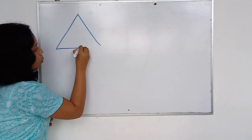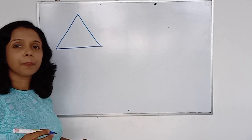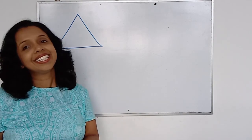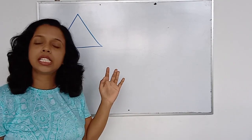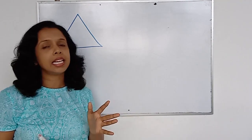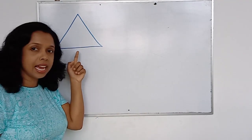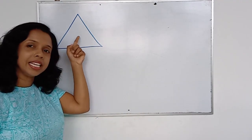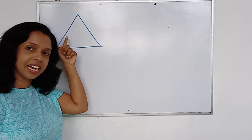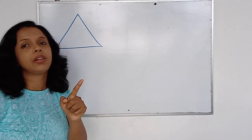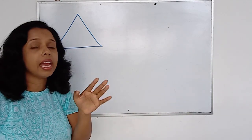Tell me, what is this? It's a triangle. So what are the features you can see in a triangle? You have three sides, three interior angles, right?